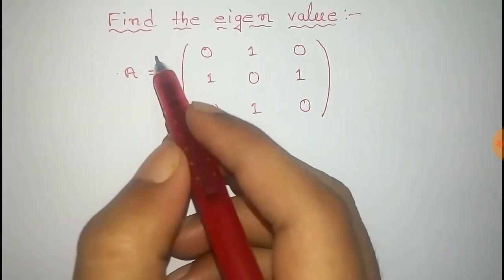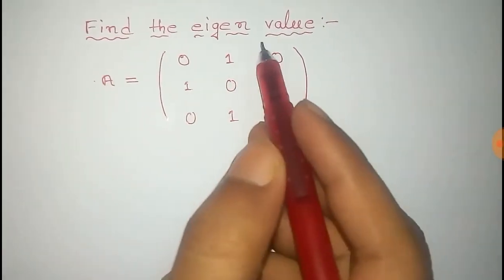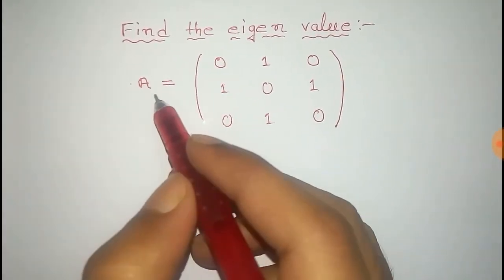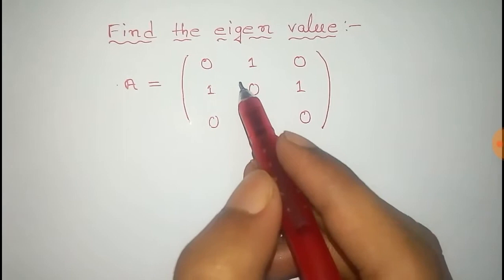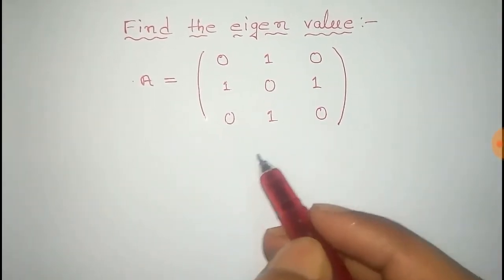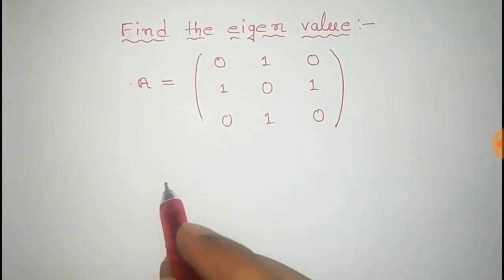In this video, we will find the eigenvalue of a matrix. For example, we take this matrix A, that is: 0, 0, 1, 0, 1, 0, 1, 0.